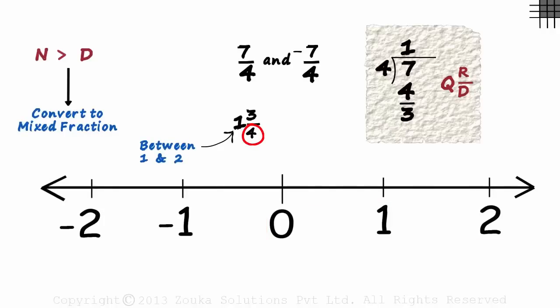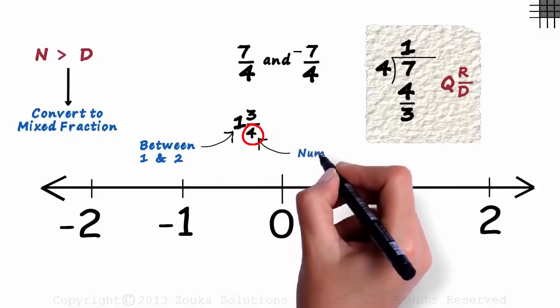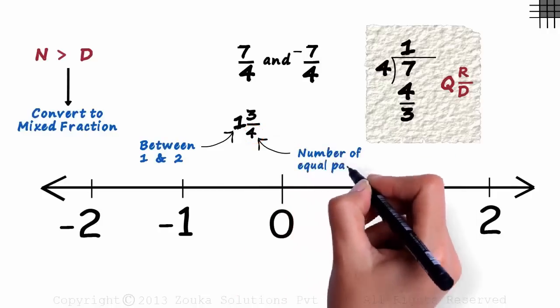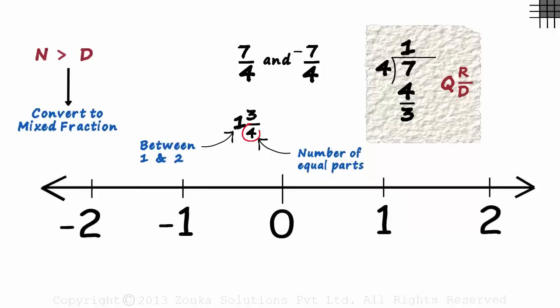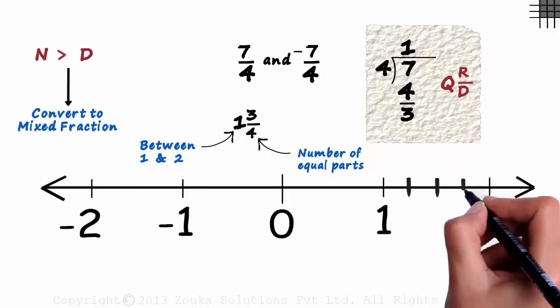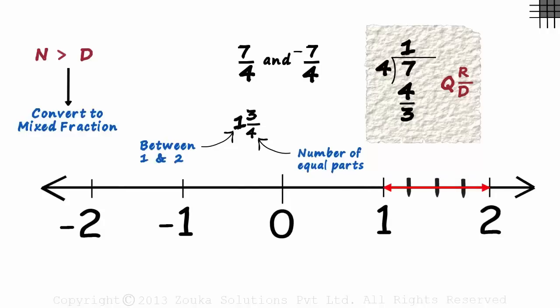The denominator of the proper fraction part tells us the number of equal parts this segment is divided into. Since it is 4, we divide this segment into 4 parts. This segment between 1 and 2 is divided into 4 equal parts.